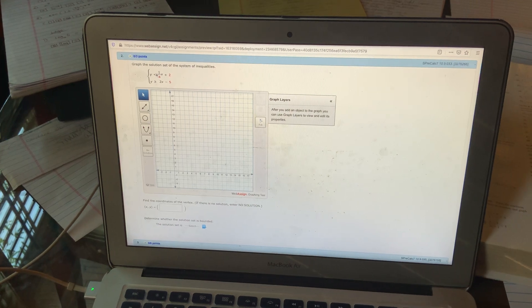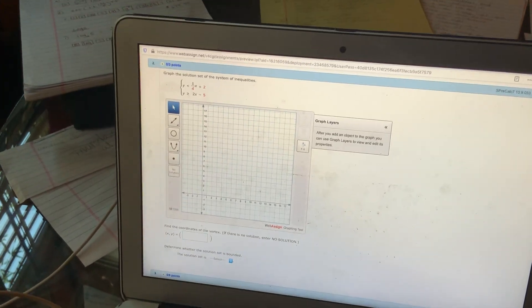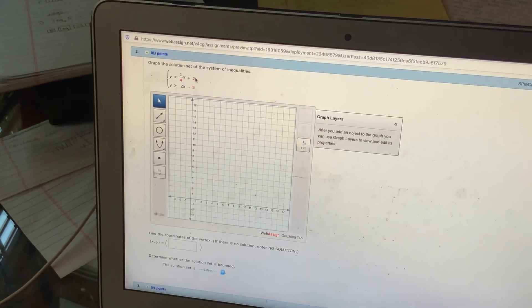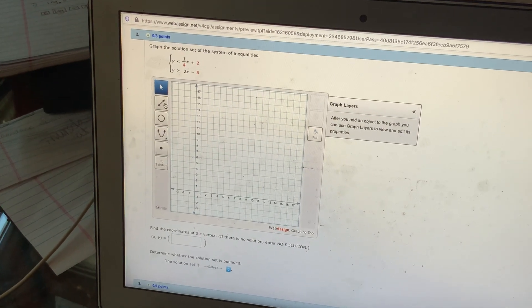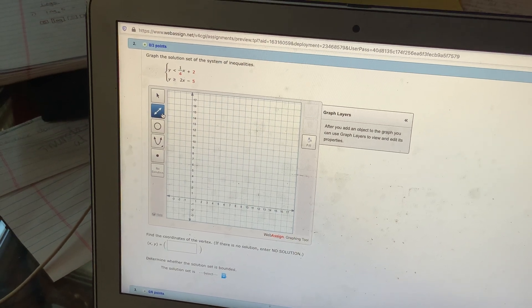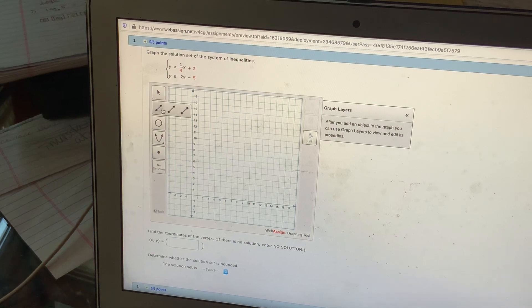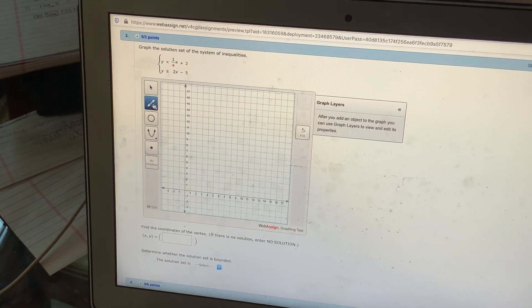So the first thing I'm going to do is look at my top inequality. And remember, you graph this just like it was an equation. Now these are lines, so make sure that you're graphing a line. You don't want that ray. You don't want that segment. You want to make sure that the line is highlighted.